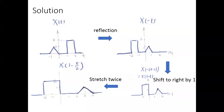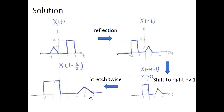A more complicated problem involves a three-step time operation: first, reflection over the vertical axis; second, shift right by one, changing t to t-1; third, stretch twice by changing t to t/2. So the minus one does not change — we only change t to t/2. From minus one to zero after stretching, it becomes minus two to zero. The triangle that starts at one and ends at two, after stretching, starts at two and ends at four — everything multiplied by two.